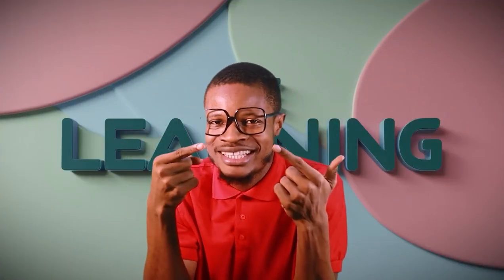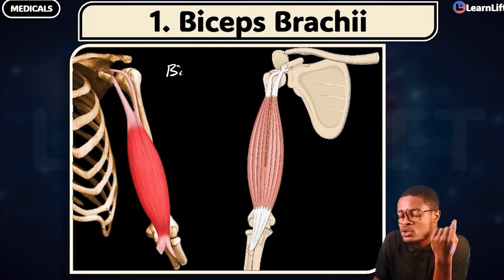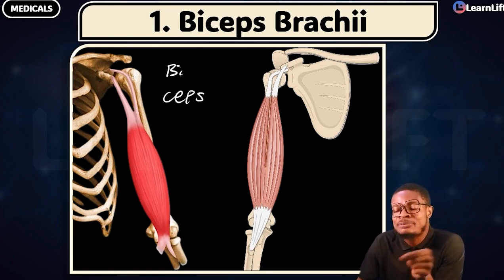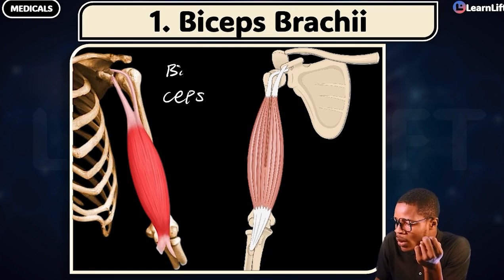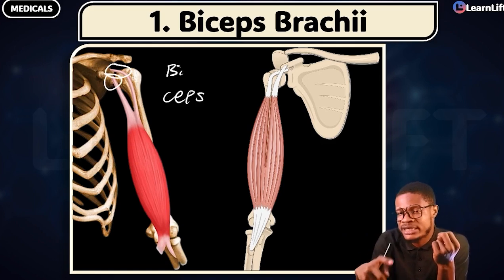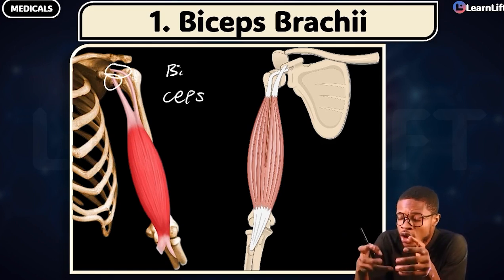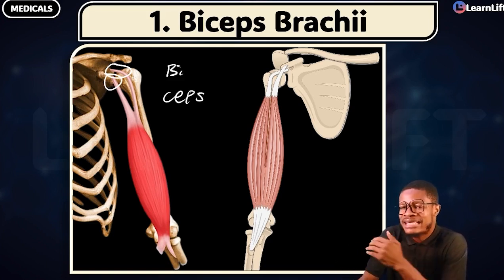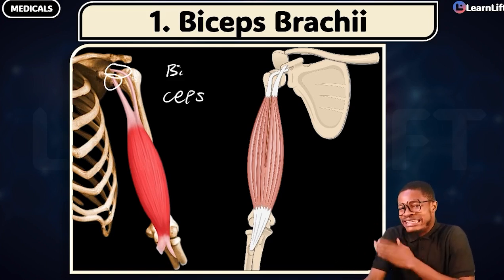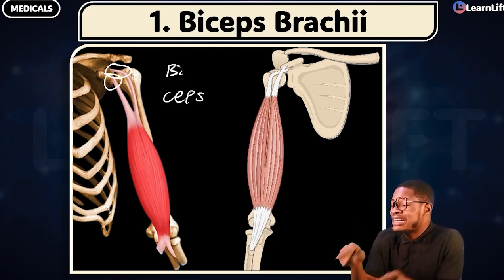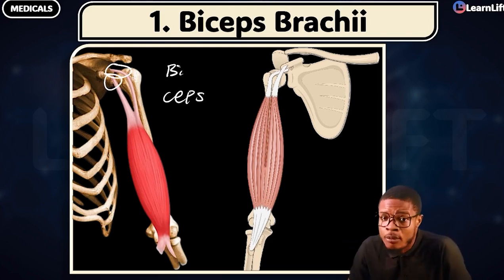The word 'bi' means two, and 'ceps' means head. So your biceps brachii — it has two heads. Look: one head here, another head here — the long head of biceps and the short head of biceps. These are the two heads. 'Brachii' is gotten from 'brachium,' which means arm. So the muscle in the arm that has two heads — your biceps brachii.